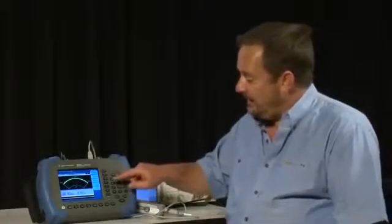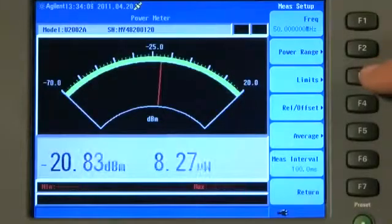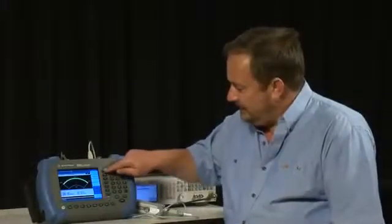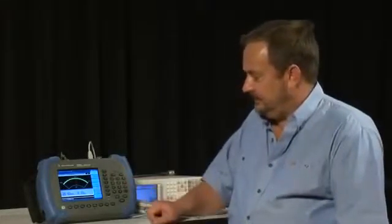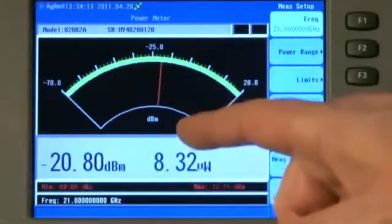Now don't forget, before we start making an accurate measurement, we need to tell the analyzer what frequency we're measuring so that it can load the correct calibration constant. I'll just press Measure Setup and select Frequency, and I'll enter 21GHz. Now we're making an accurate calibrated power meter measurement of our 21GHz signal.